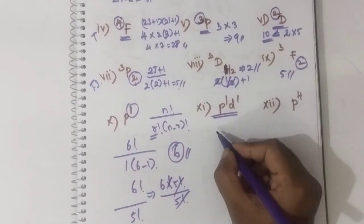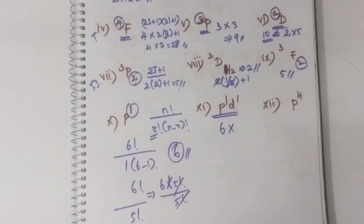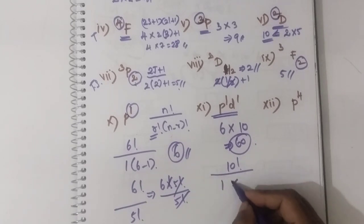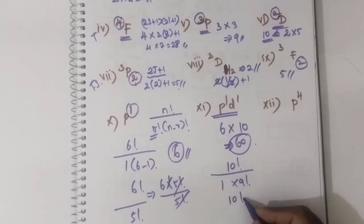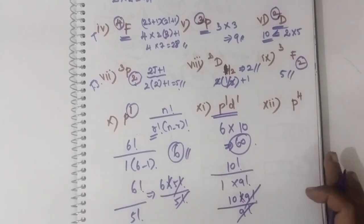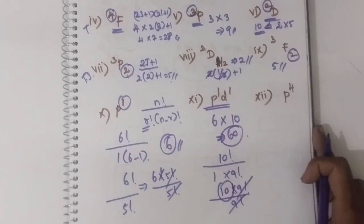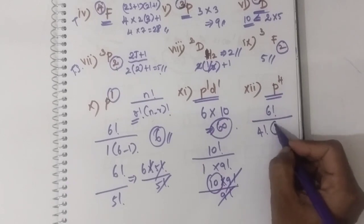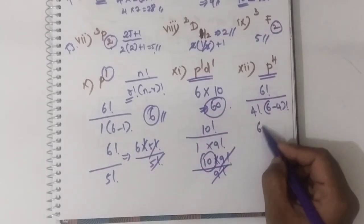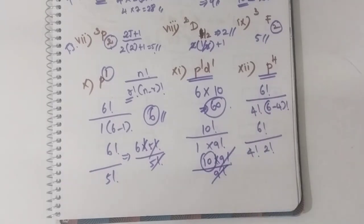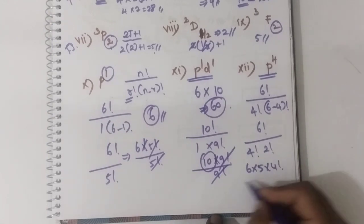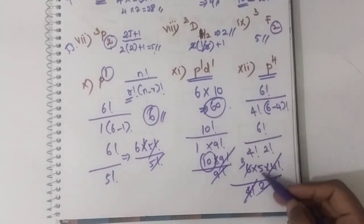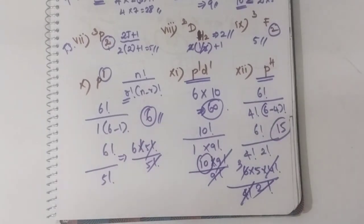For P1D1, it is calculated separately and multiplied. For P1 it is 6, and for D1 it is 10 factorial divided by 1 factorial into 9 factorial, which gives 10. So total microstates are 6 into 10 equals 60. For P4: 6 factorial divided by 4 factorial into 2 factorial equals 6 into 5 into 4 factorial divided by 4 factorial into 2, which gives 15.